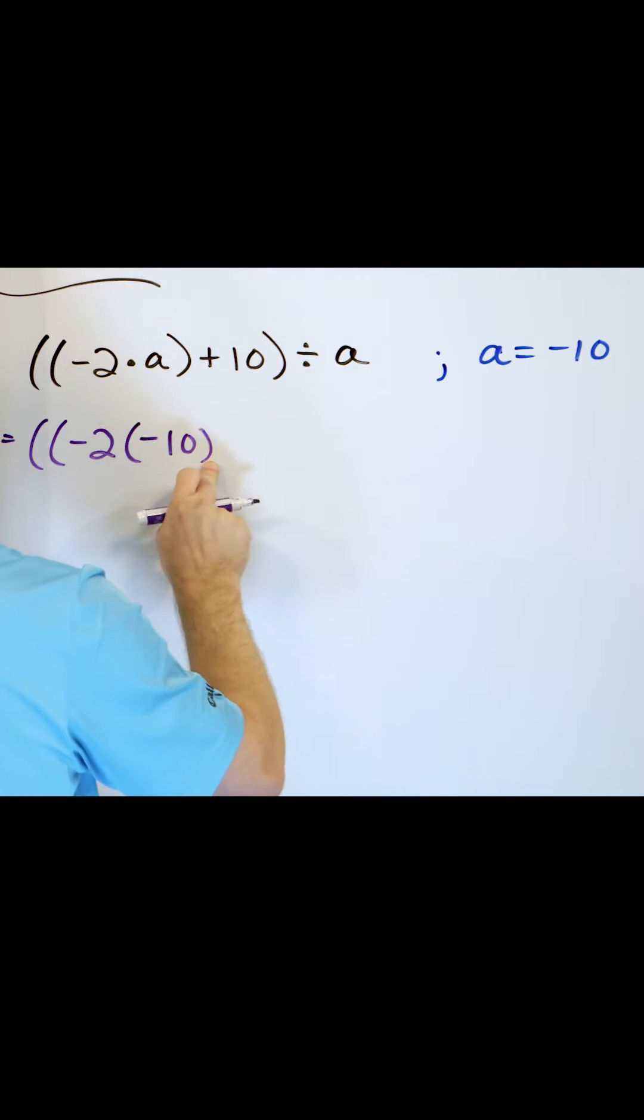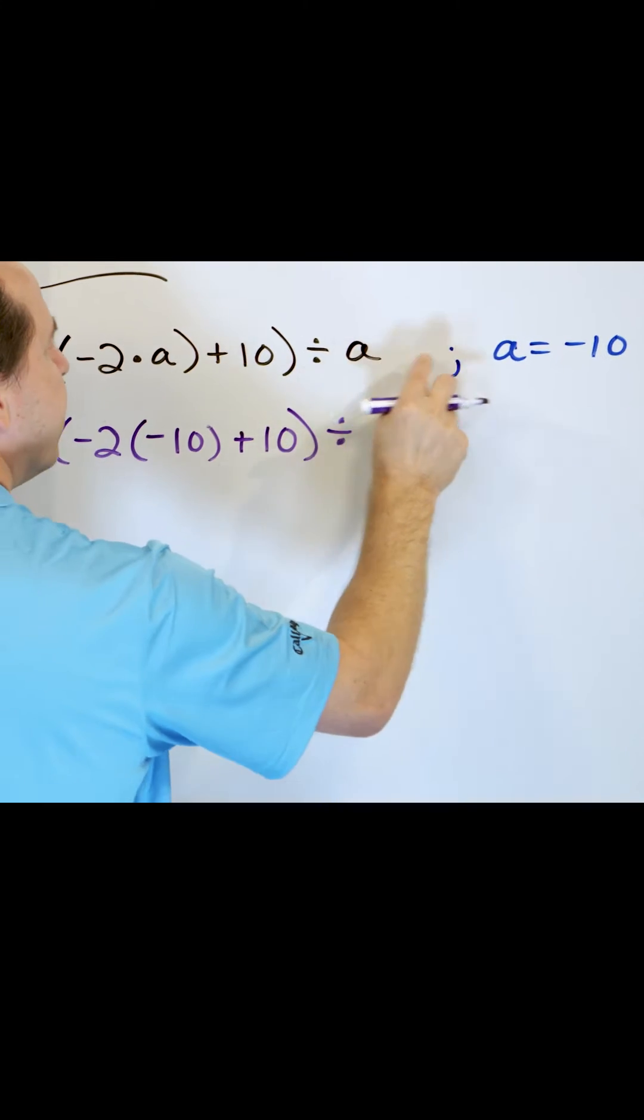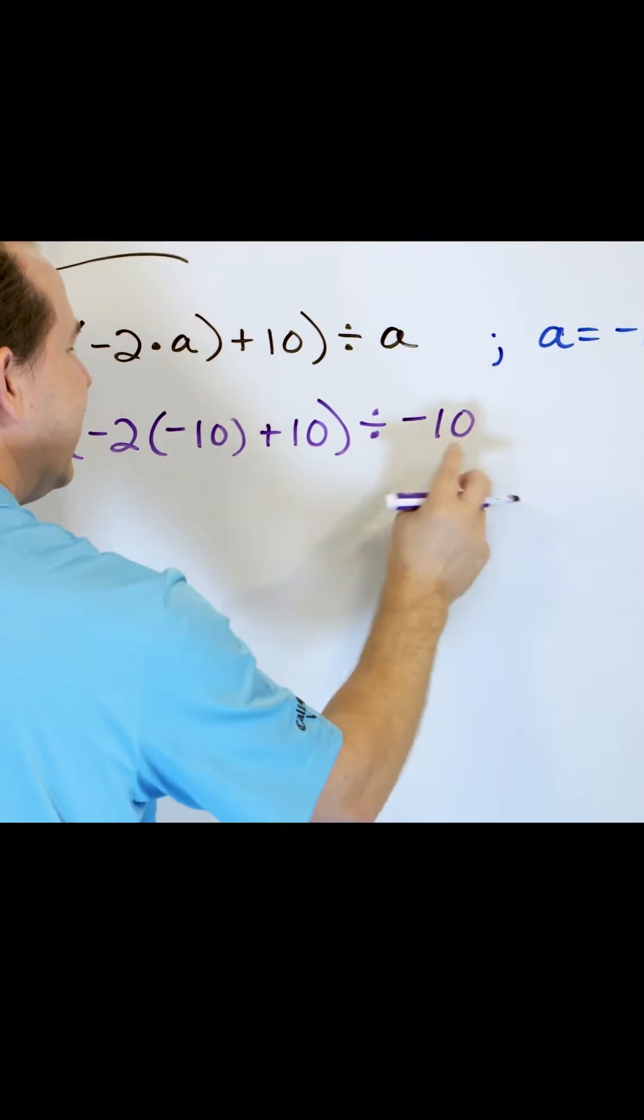Here on the inside we have negative 2 times negative 10, and then we're going to take the parentheses off. We still have to add 10, and then we're going to divide by negative 10 again.